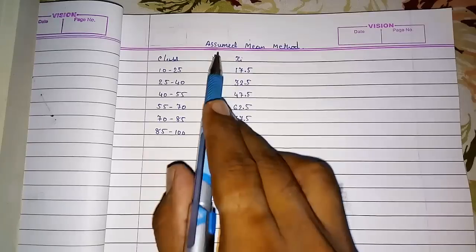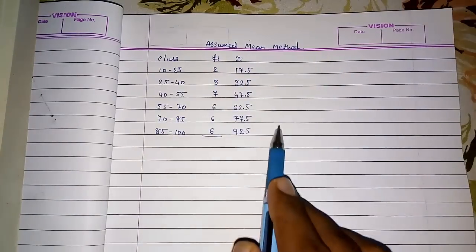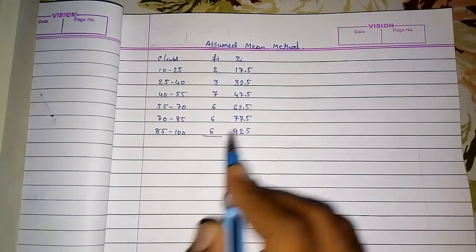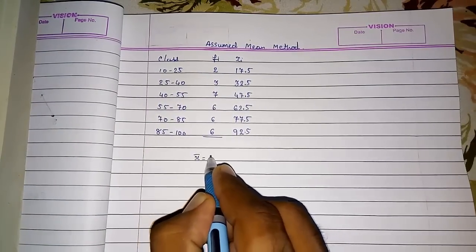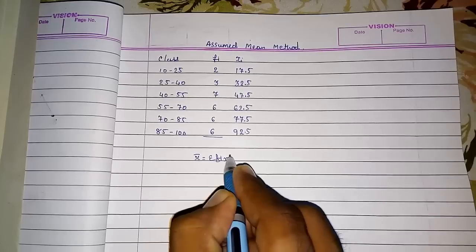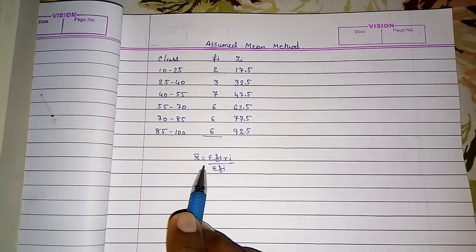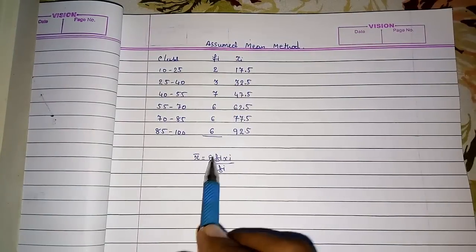In simple mean method, we are multiplying this fi xi and directly finding the sum of fi xi and the sum of fi. And then dividing. This is the simple formula: x̄ = Σfi xi / Σfi. But we are not going to use this.